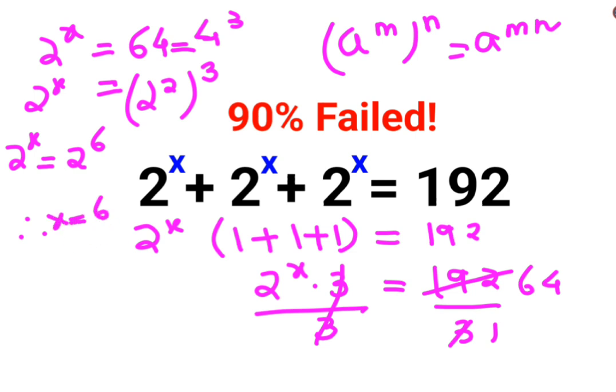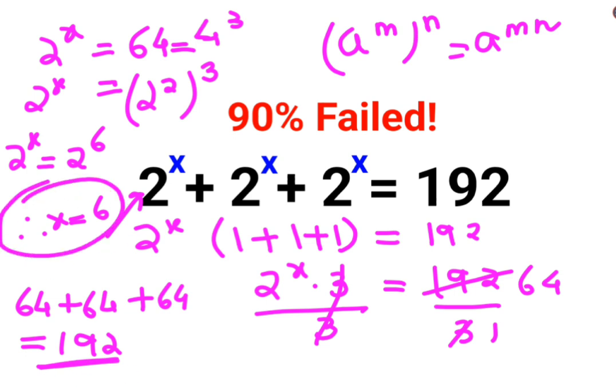So I hope you understood how to solve these kinds of problems. Now let's put this value over here. So 2 raised to x is 64 plus 64 plus 64. When you add all of them, you get the answer as 192. So here we can say the value of x equals 6 is absolutely correct for this particular question.